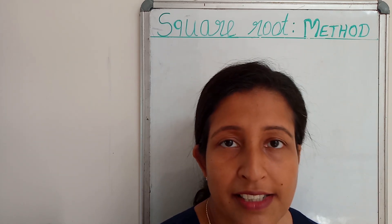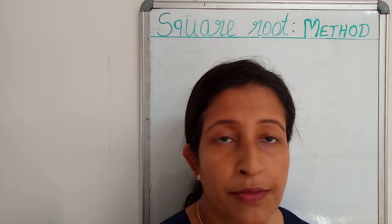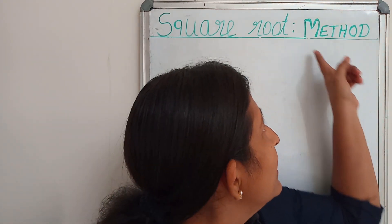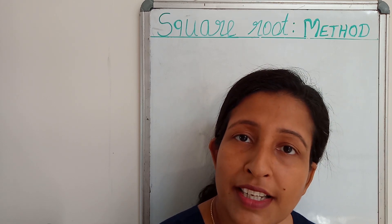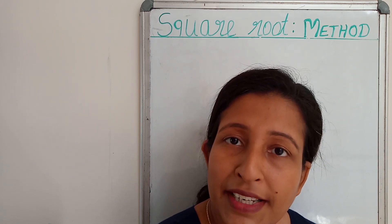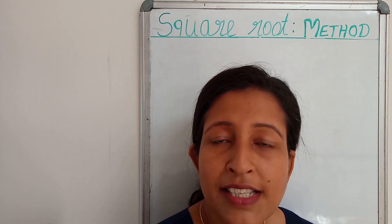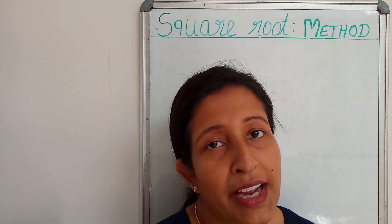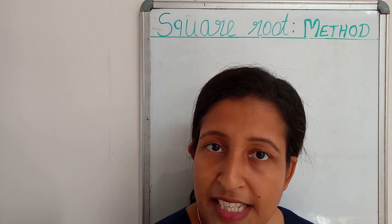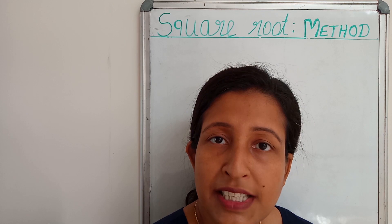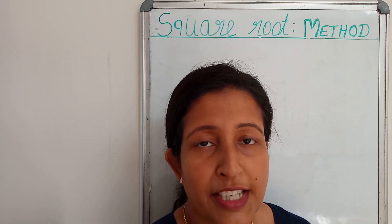In this class, we are going to discuss two methods for finding the square root of a number. The first method is the repeated subtraction method, and the second one is the prime factorization method. Both methods are very easy, and first we are going to discuss the repeated subtraction method.